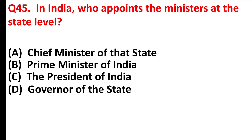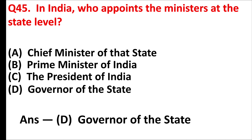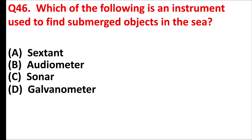In India, who appoints the ministers at the state level? Answer is option D: the Governor of the state. Which of the following is an instrument used to find submerged objects in the sea? Answer is option C: sonar.